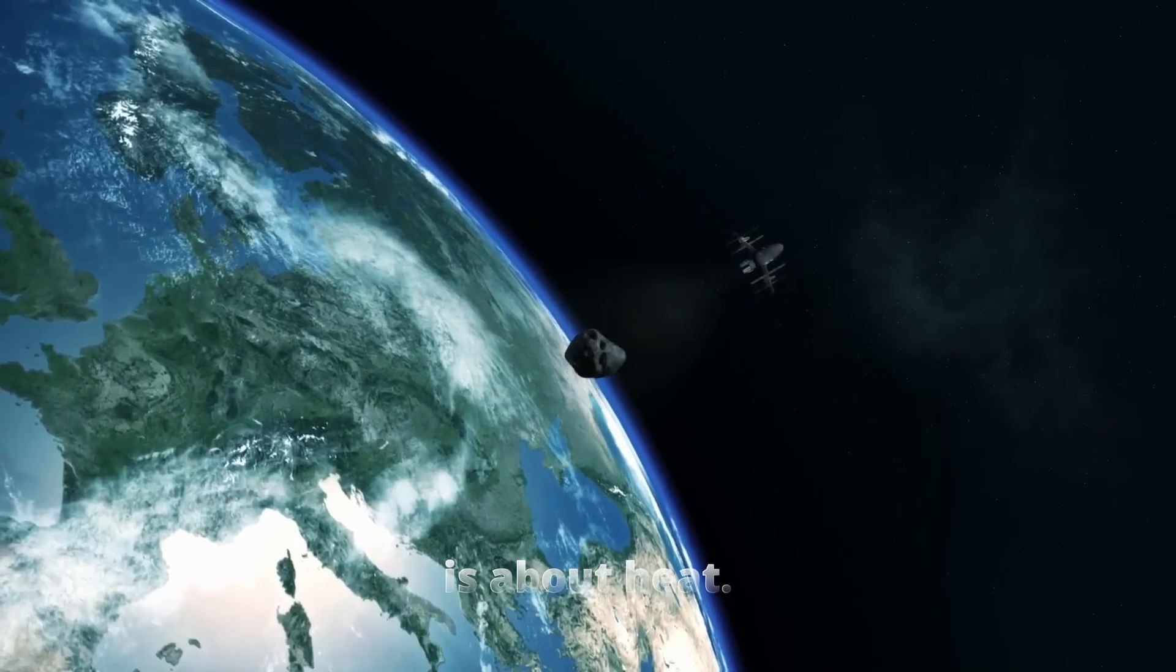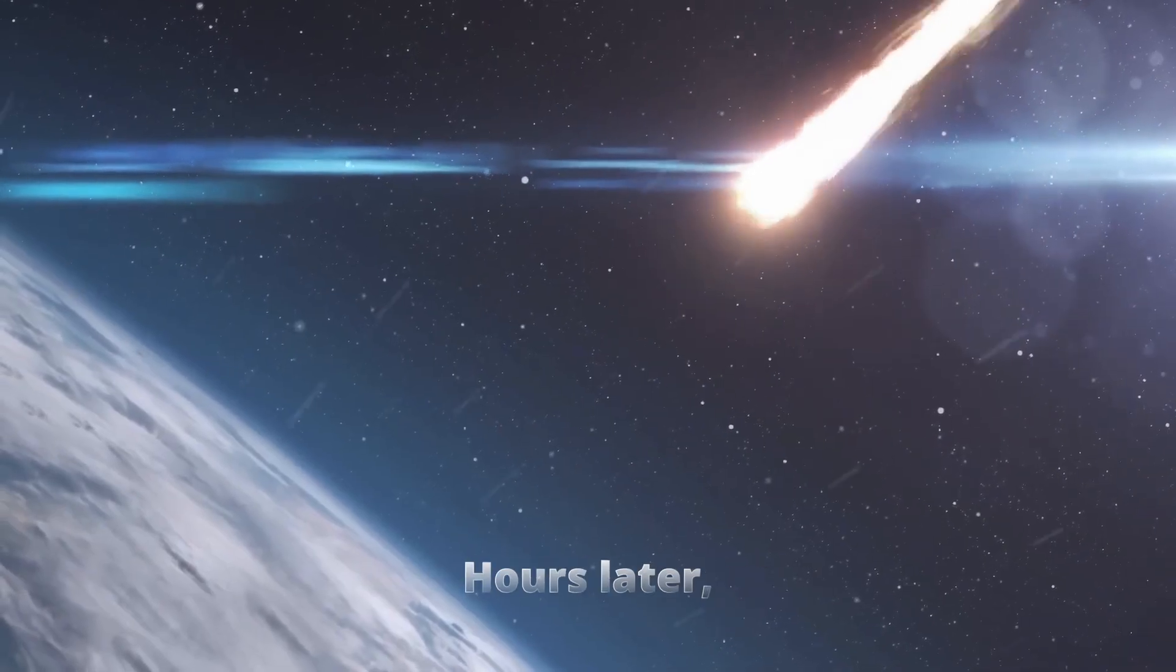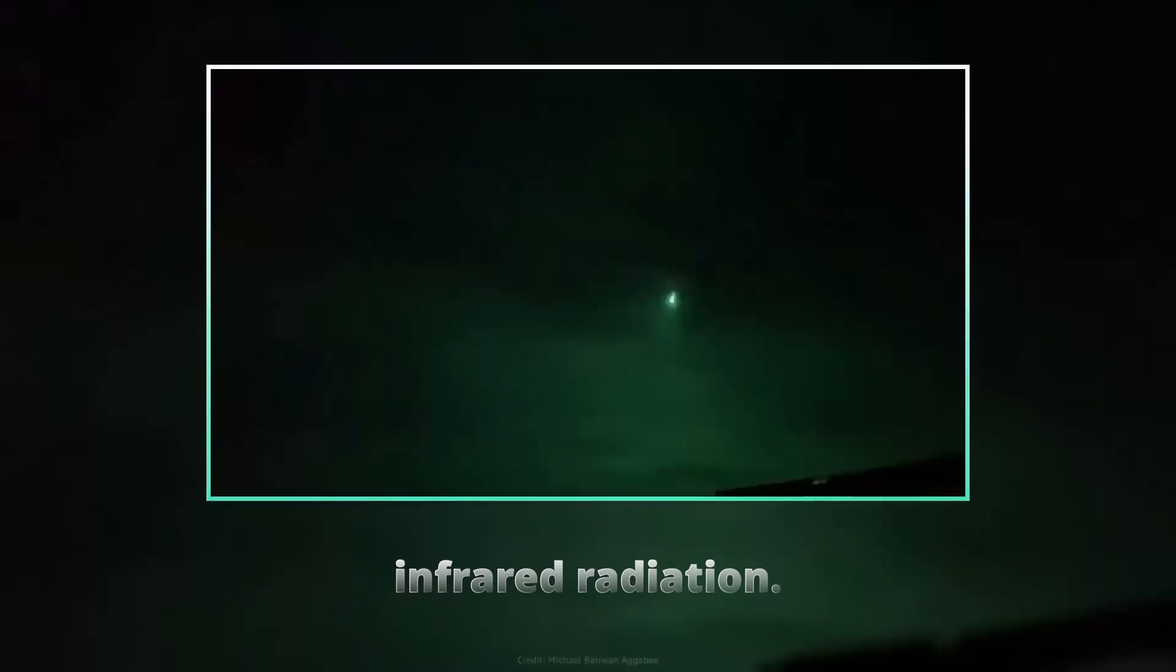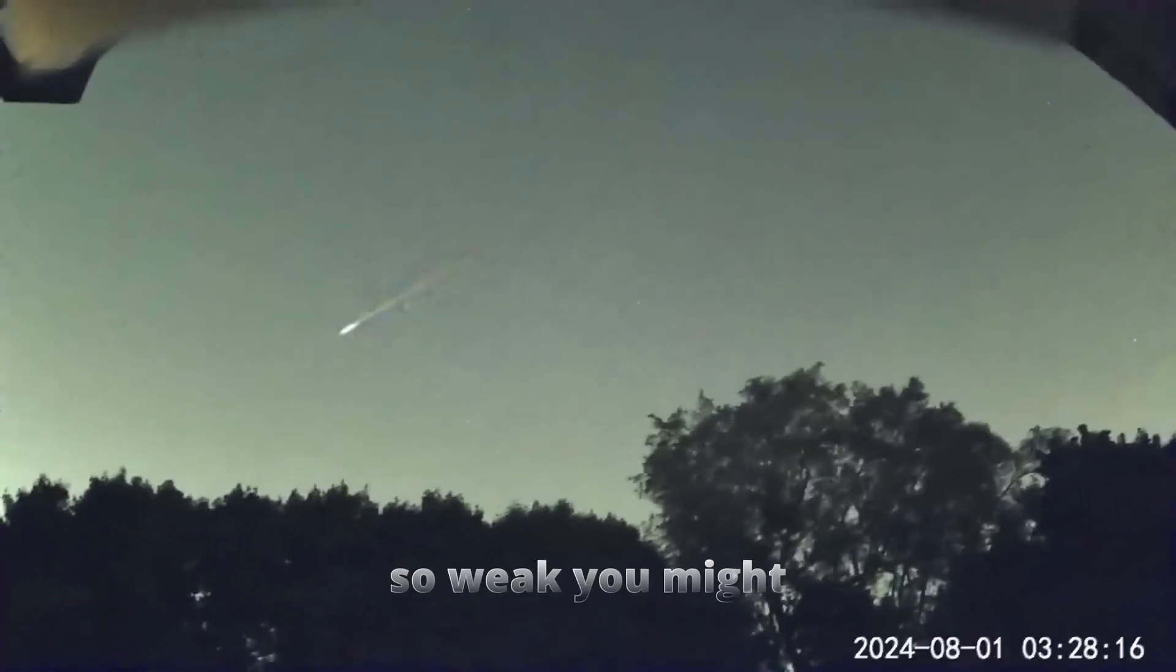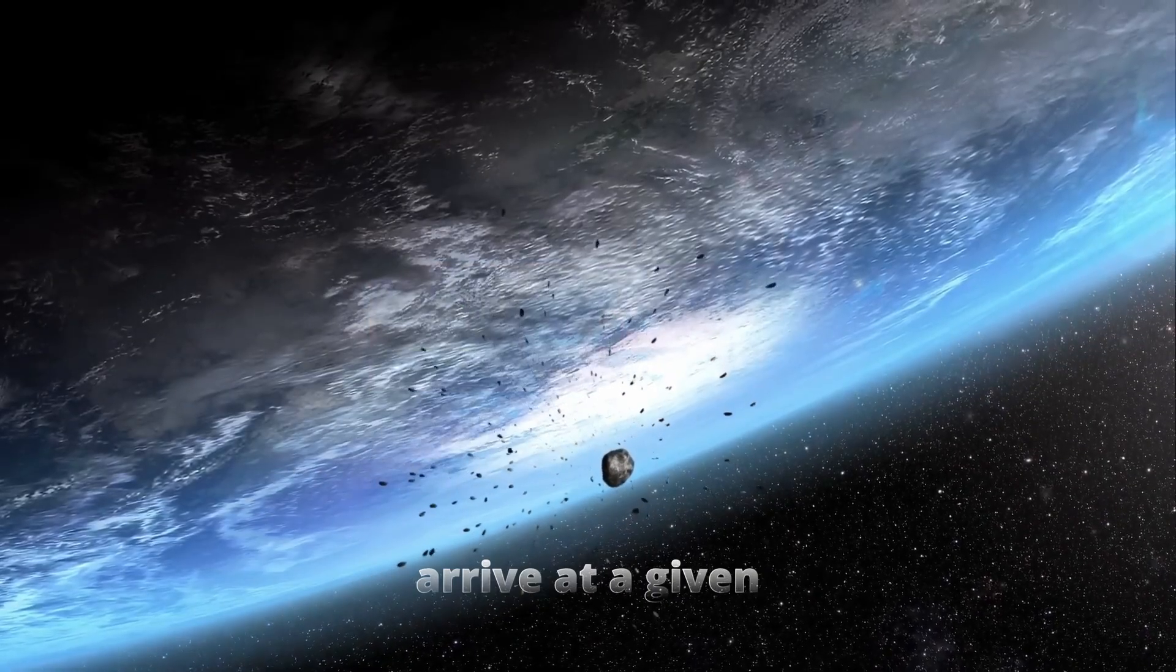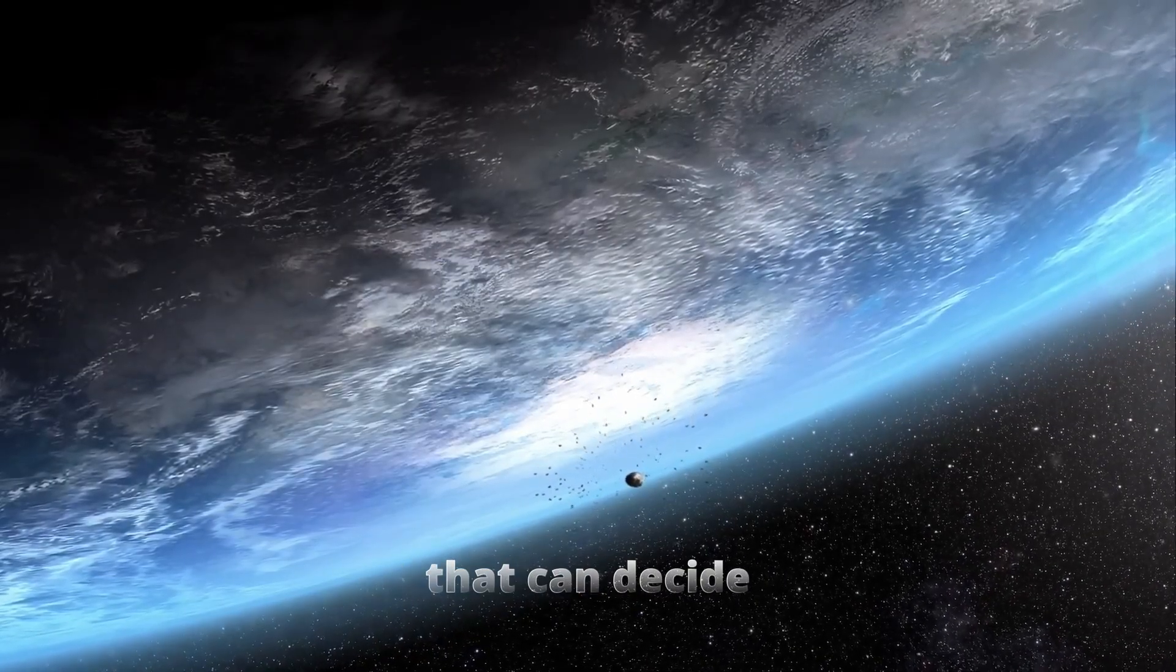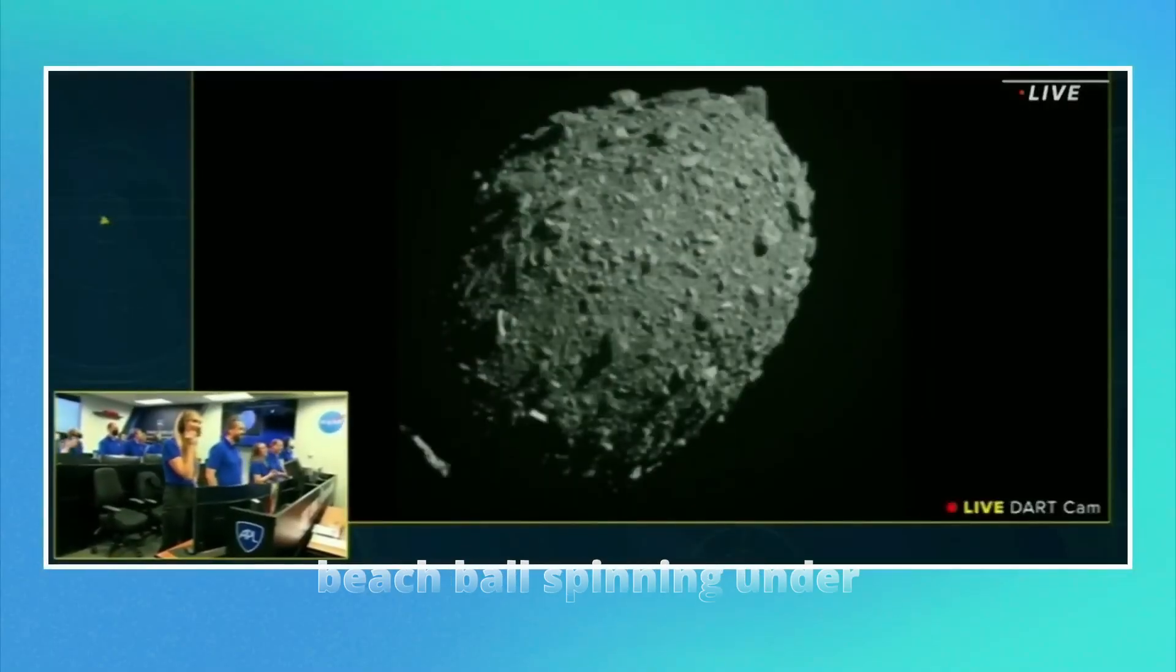At its simplest, the Yarkovsky effect is about heat. When sunlight strikes an asteroid, its surface absorbs energy and warms up. Hours later, as the asteroid rotates, those heated areas cool off and release energy back into space as infrared radiation. That release isn't perfectly symmetrical. It creates a faint recoil, a push so weak you might think it's meaningless. For small bodies like Apophis though, even this whisper of force matters. Over many orbits, it can make the asteroid arrive at a given point in space earlier or later than predicted. And that's exactly the kind of change that can decide whether close pass becomes direct hit.